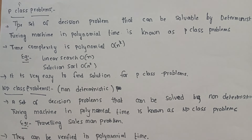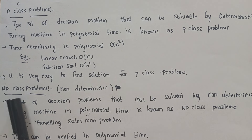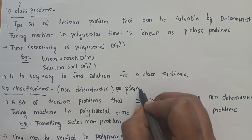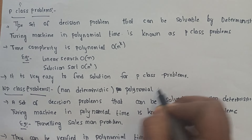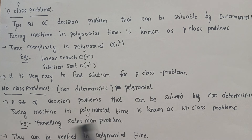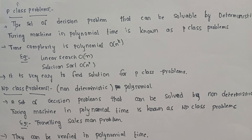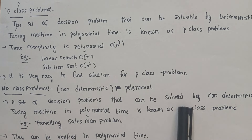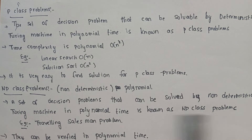Coming to the NP class problems. NP represents non-deterministic polynomial. NP class problem means non-deterministic polynomial problems. A set of decision problems that can be solved by a non-deterministic Turing machine in polynomial time is known as NP class problems.